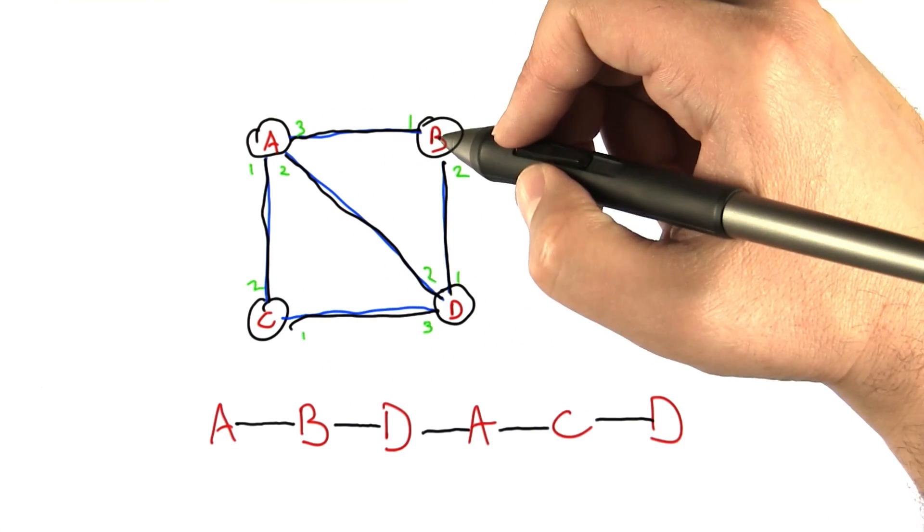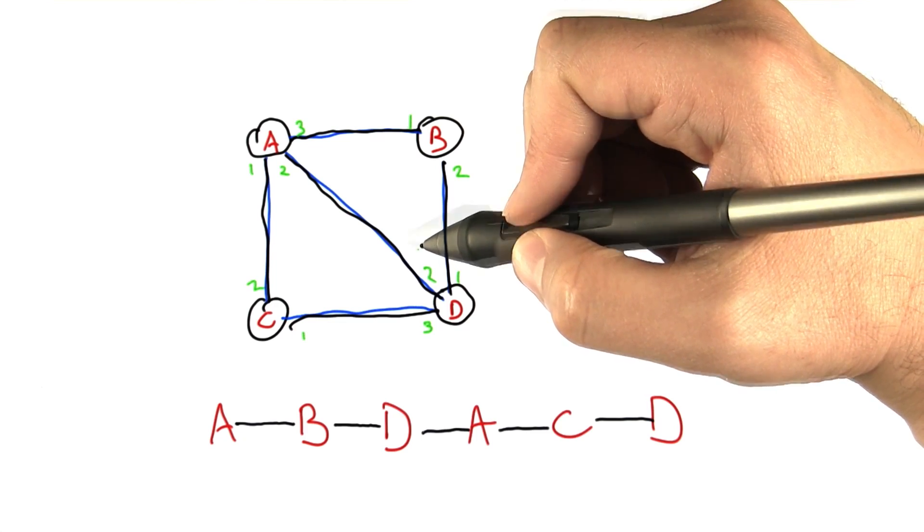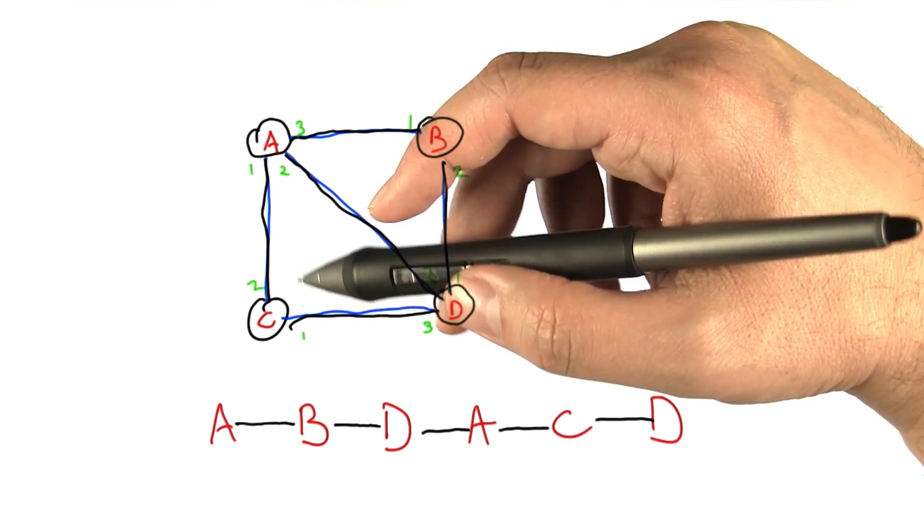So notice that these nodes B and C, which were not either the beginning or the ending of the path, the Eulerian path, have an even degree, and that has to be what happens.